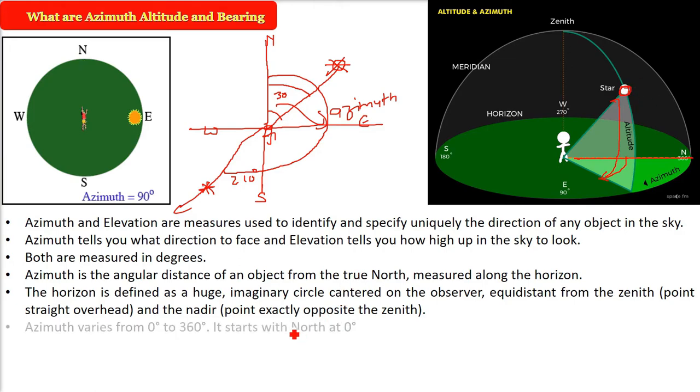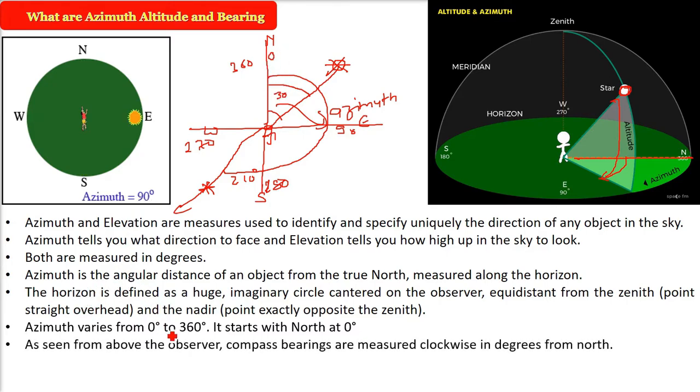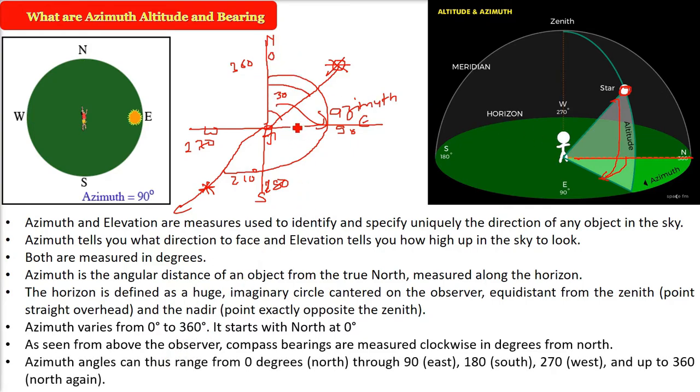Now you want to look up. For that, you need altitude and elevation. Azimuth varies from 0 degrees to 360 degrees and it starts always with north, that is 0 degrees. As seen from the observer, the compass bearings are measured clockwise, always clockwise, in degrees from north.